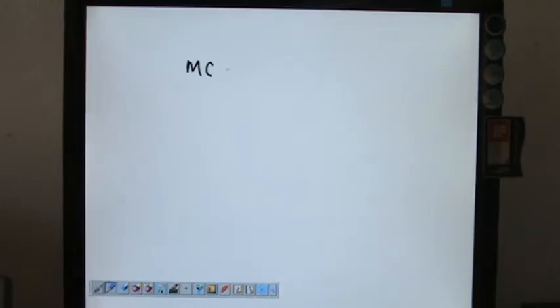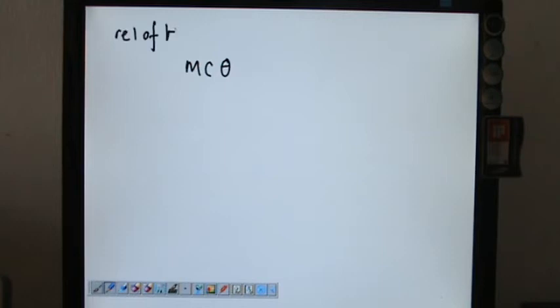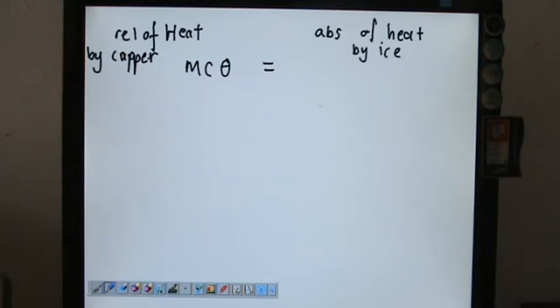So the heat release is actually MC theta by the copper. The release of heat by copper. So this is equal to absorption of heat by ice. Absorption of heat by ice. So you could write ML. This is another M.